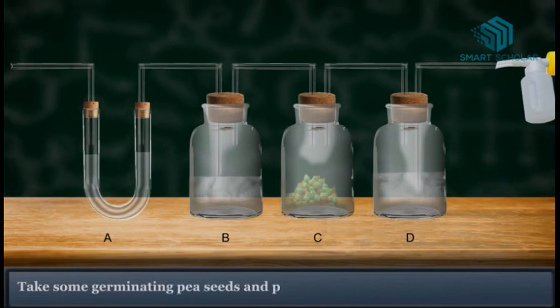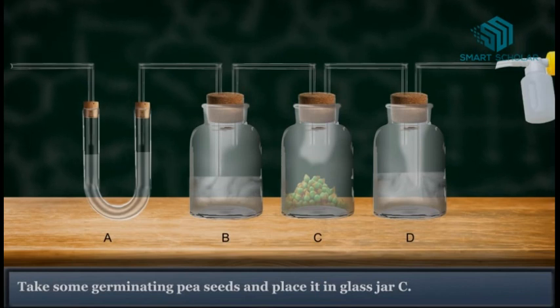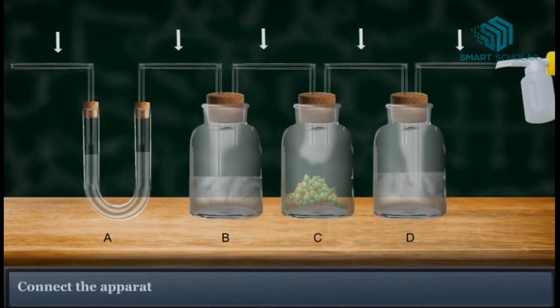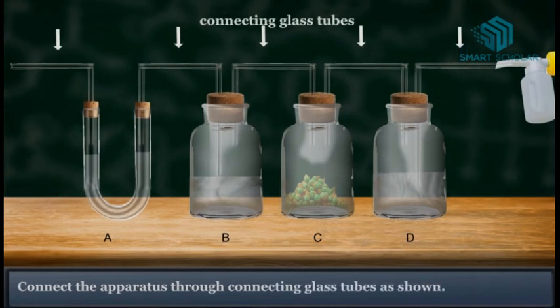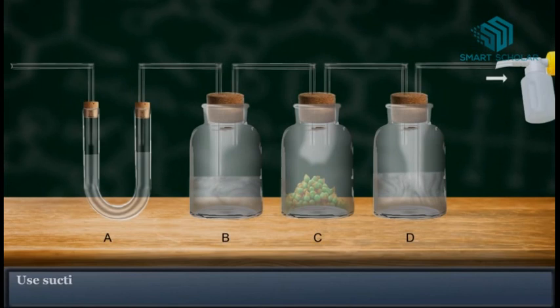Take some germinating pea seeds and place them in glass jar C. Connect the apparatus through connecting glass tubes as shown.